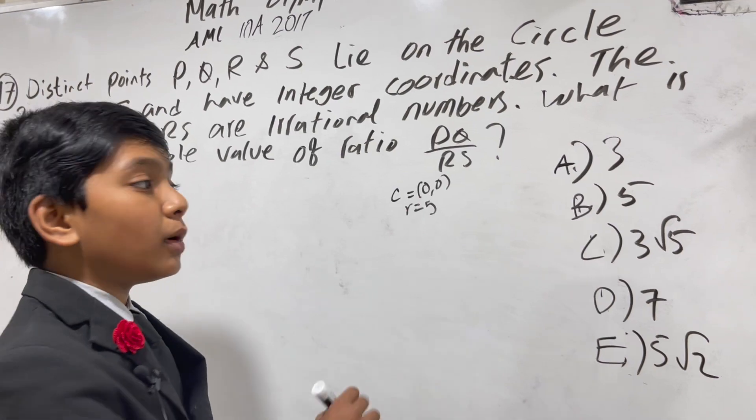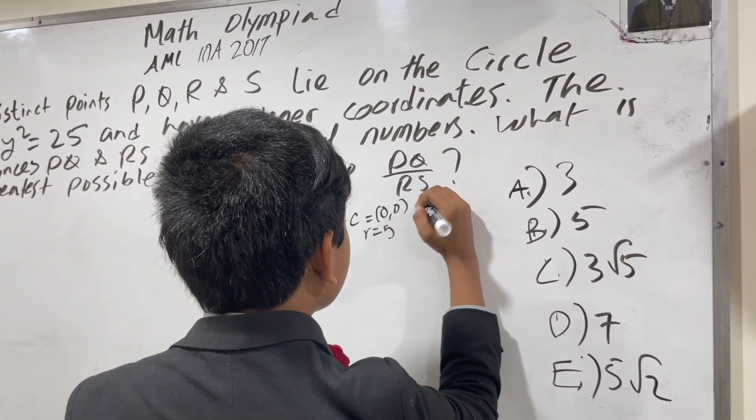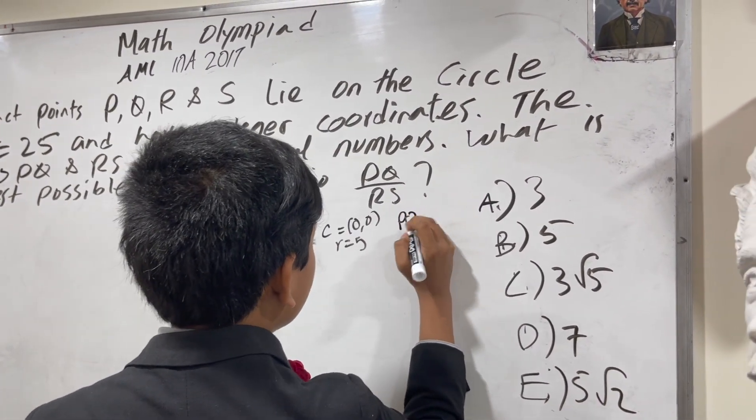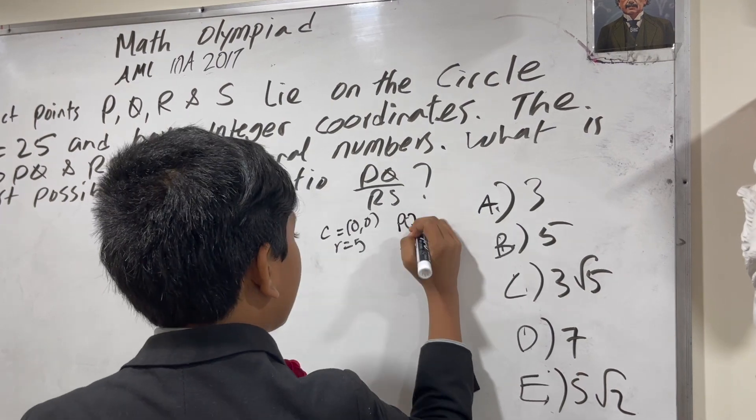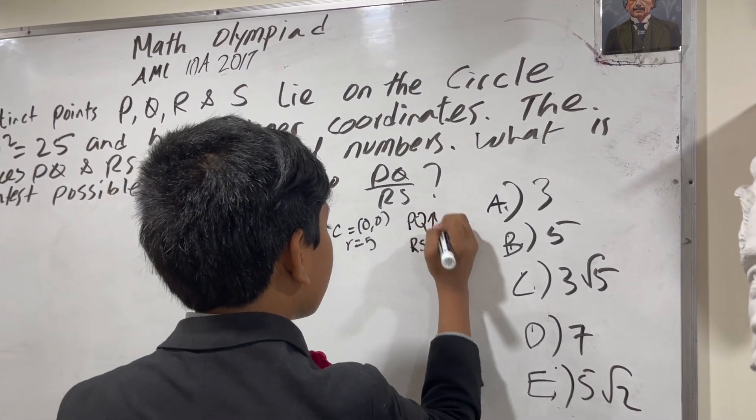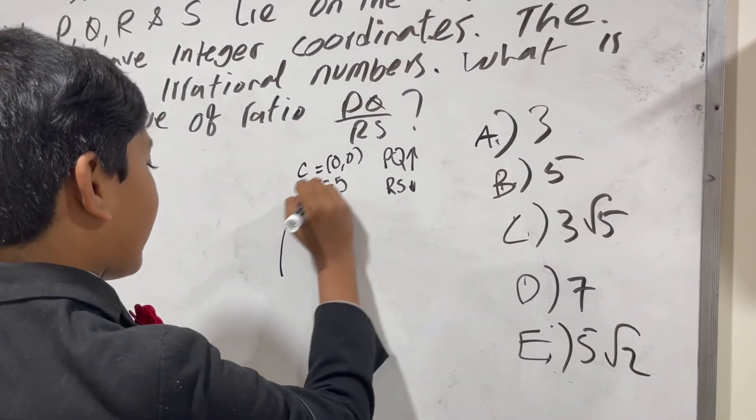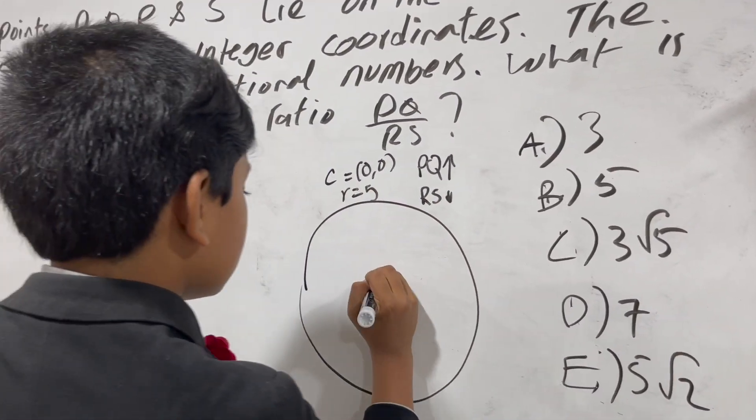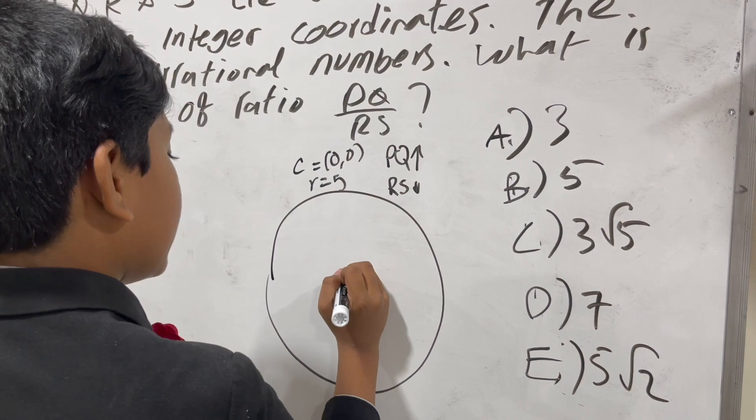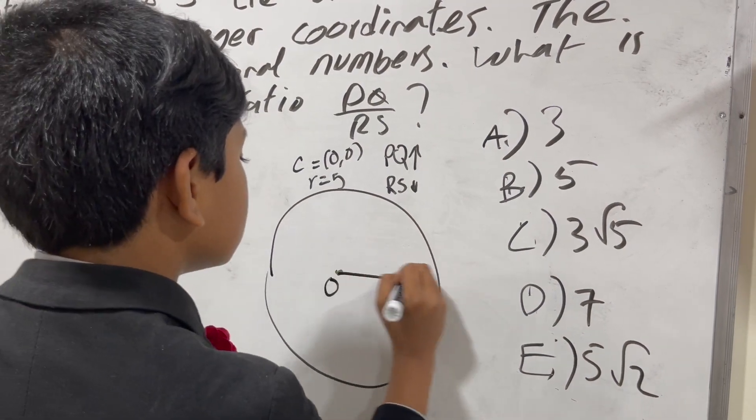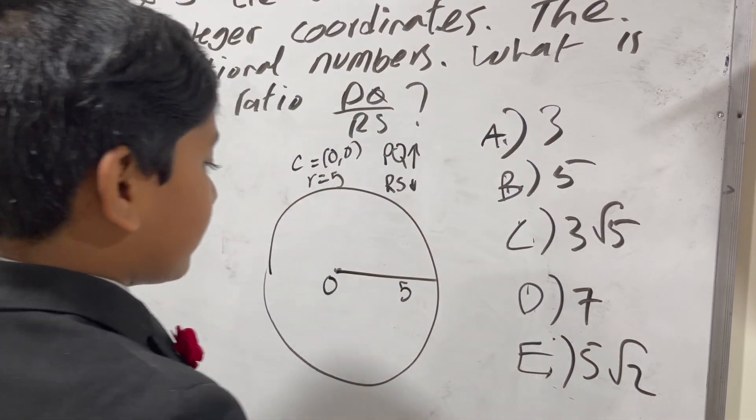So to get the greatest possible, we're going to have to maximize PQ and minimize RS. How can we do that? Well first, let's draw out our circle. So here's our circle. I'm going to say it has center O and it has radius 5.